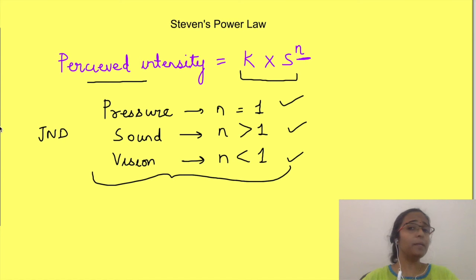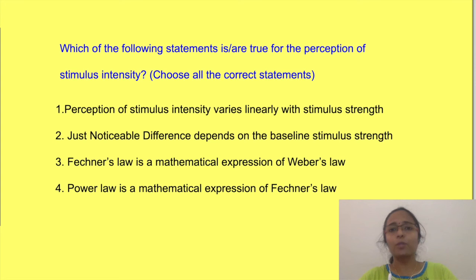Okay, now let's come back to our original question. Which of the following statements are true for the perception of stimulus intensity? The first option is not correct. We have seen that perception of stimulus intensity depends on n in power law. The second option is correct, as we have seen in the example of weights which was explained by Weber.